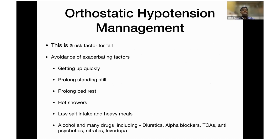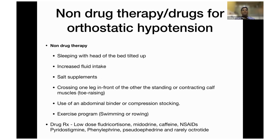The problem of orthostatic hypotension is a potentially limiting factor when using antihypertensive therapy — patients tend to fall. Diagnose postural hypotension by checking for a systolic BP drop of more than 20 mmHg, diastolic drop of more than 10, or symptoms of cerebral hypoperfusion such as dizziness. Exacerbating factors include: getting up quickly, prolonged standing, prolonged bed rest, hot showers, low salt intake, heavy meals, and alcohol. Many drugs can cause postural hypotension: diuretics, calcium channel blockers, tricyclic antidepressants, antipsychotics, nitrates, and levodopa. Non-drug therapy includes sleeping with head tilt up, increased fluid intake, salt supplement, crossing one leg in front of the other, contracting calf muscles, abdominal binder, compression stockings, and exercise programs.